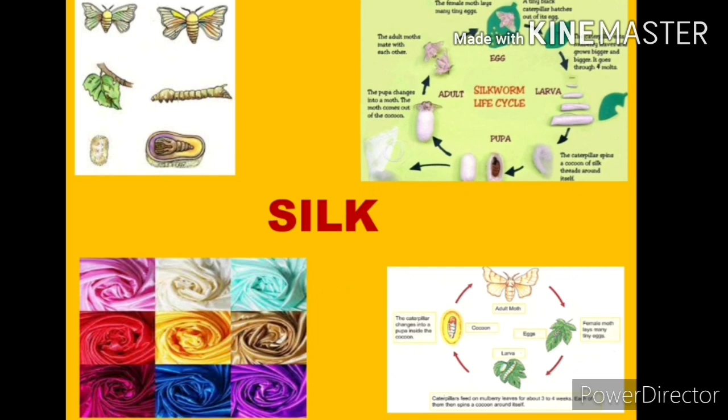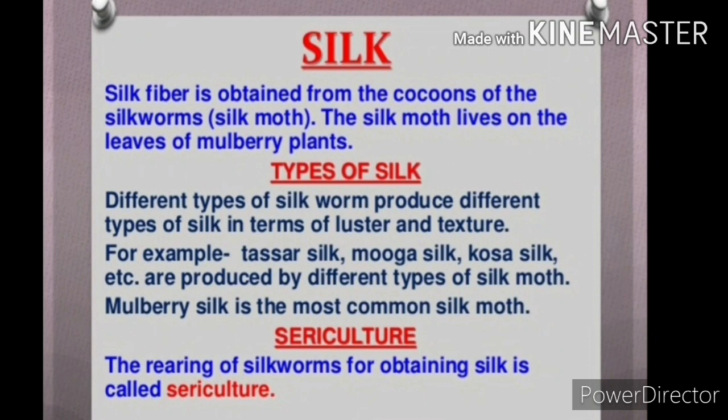Next we discuss silk. Silk is also obtained from an animal. Silk fiber is obtained from the cocoon of the silkworm. The silk moth lives on leaves of mulberry plants. Different types of silkworm produce different types of silk in terms of luster and texture — for example, Tassar silk, Mooga silk, and Kosa silk are produced by different types of silk moth. Mulberry silk is the most common. The rearing of silkworm for obtaining silk is called sericulture.